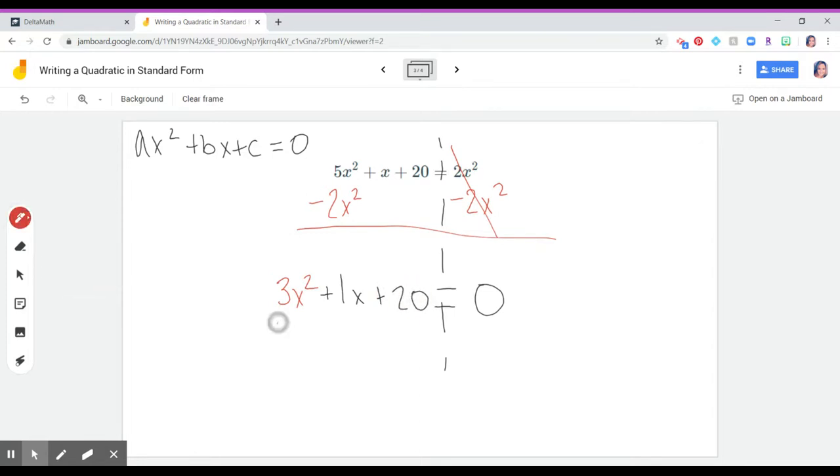And then identifying our a is 3. The b value in standard form, bx, is going to be 1. And c is 20.